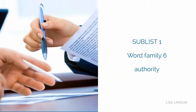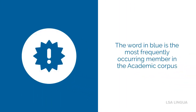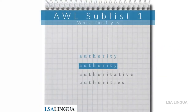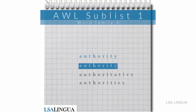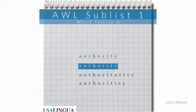Word family 6: authority. Please note that each word in blue is the most frequently occurring member of the word family in the academic corpus. Here you see an overview of all of the members of this particular word family. If you'd like to know how they're pronounced, please watch the first series that we developed.